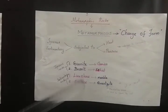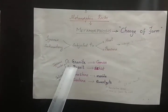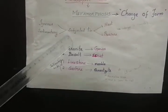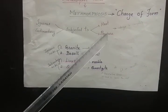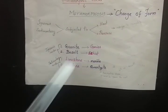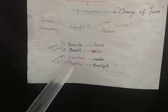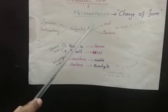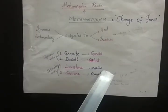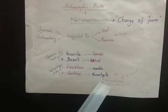For example, granite and basalt are igneous rocks. When granite and basalt are subjected to extreme heat and pressure, granite changes into gneiss and basalt changes into schist. Similarly, limestone and sandstone are sedimentary rocks. When they undergo extreme heat and pressure, limestone transforms into marble and sandstone transforms into quartzite.